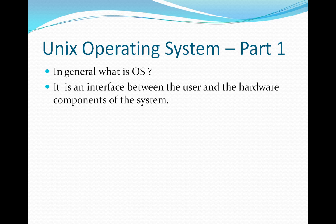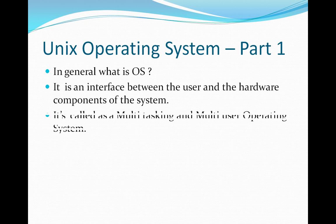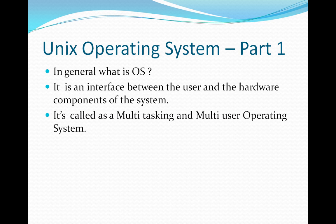UNIX is also an interface between the user and the hardware components of the system. It is called a multi-tasking and multi-user operating system, meaning you can perform multiple tasks at a time. In Windows, a single user can access a personal PC, whereas in UNIX, multiple users can access the system at the same time.